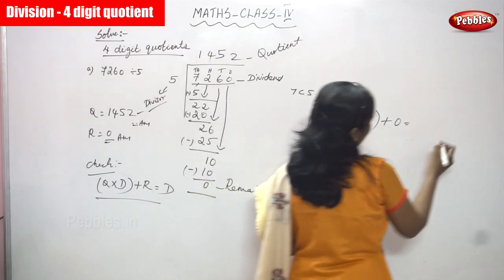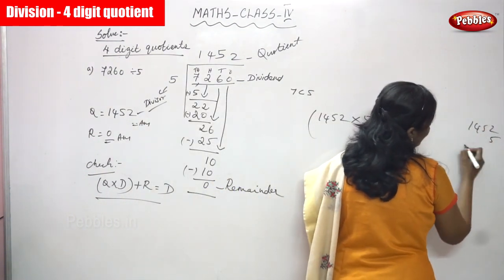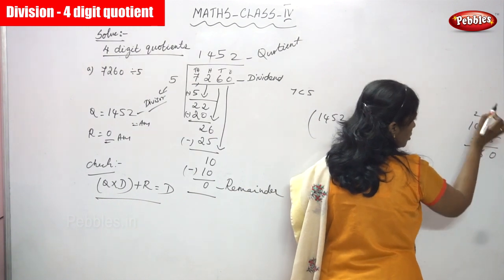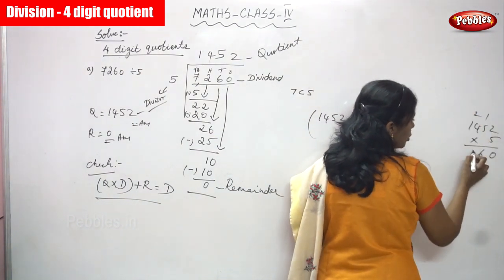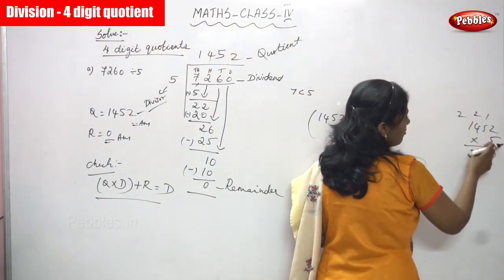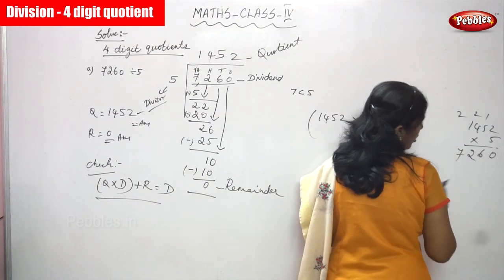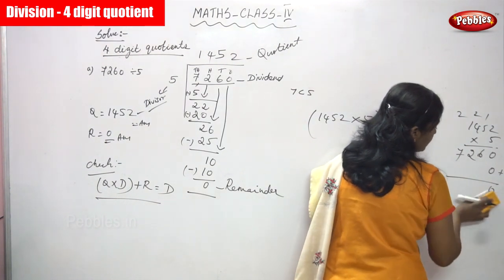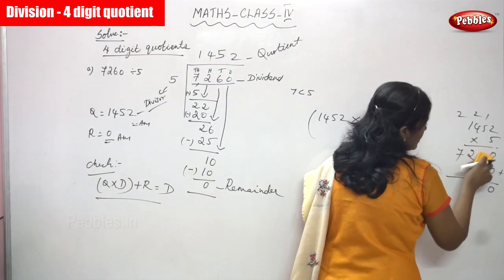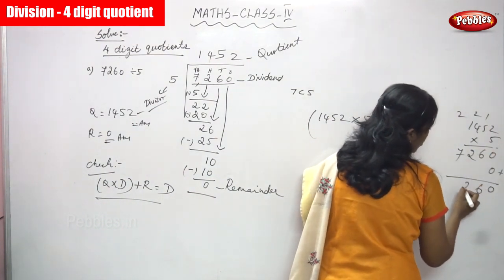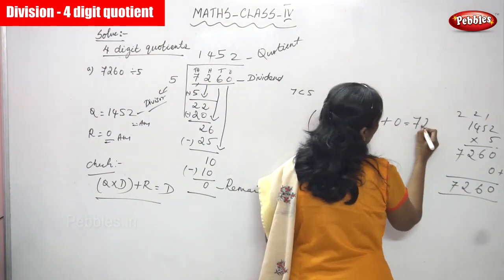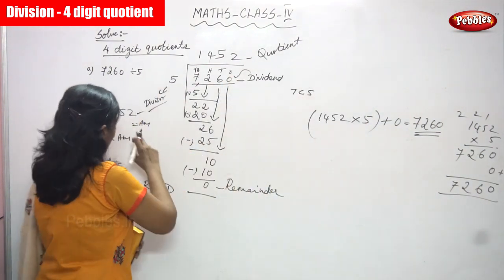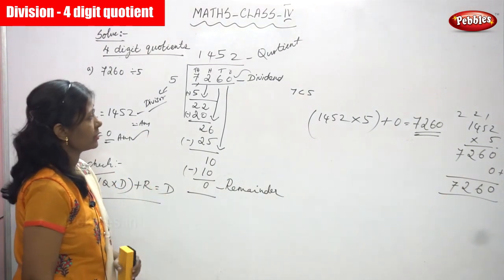So, 1452 multiplied by 5: 5 times 2 is 10, carry over 1. 5 times 5 is 25, plus 1 is 26, write 6 carry 2. 5 times 4 is 20, plus 2 is 22, write 2 carry 2. 5 times 1 is 5, plus 2 is 7. The product is 7260. Add the remainder 0: 7260 plus 0 is 7260. That is the dividend. So the quotient and remainder are both correct — this is the exact answer for the question.